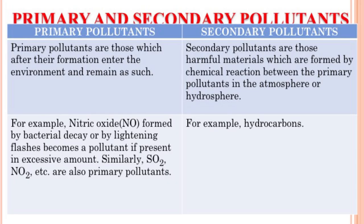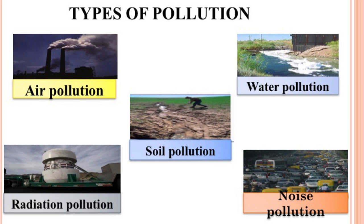Primary pollutants are those which, after their formation, enter the environment and remain as such. For example, nitric oxide — formed by bacterial decay or by lightning flashes — becomes a pollutant if present in excessive amounts. Similarly, sulphur dioxide, nitrogen dioxide, etc. are all primary pollutants. Secondary pollutants are harmful materials formed by chemical reactions between primary pollutants in the atmosphere or in the hydrosphere — for example, hydrocarbons. These pollutants are responsible for causing different kinds of pollution.